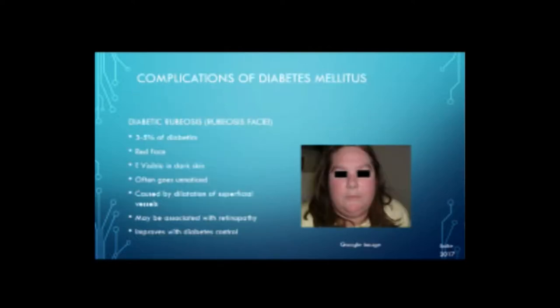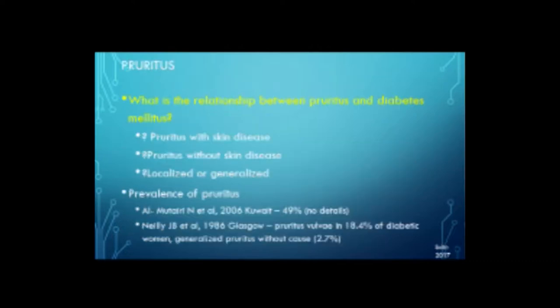There are other complications of diabetes. Diabetic rubeosis occurs in three to five percent of diabetics — it's a red face that's not easily visible in dark skin and often goes unnoticed. It's caused by vasodilatation of the superficial vessels, and it may be associated with retinopathy. It improves with diabetic control.